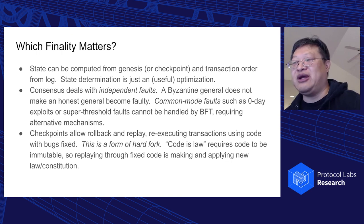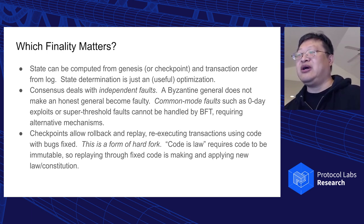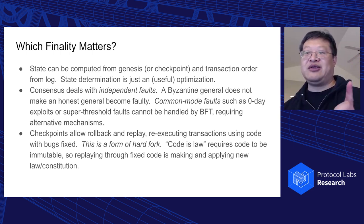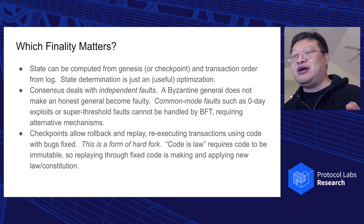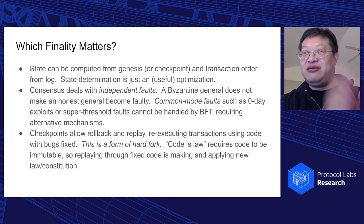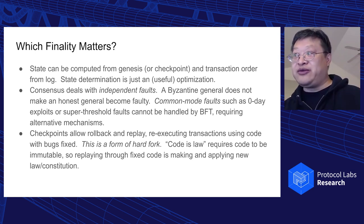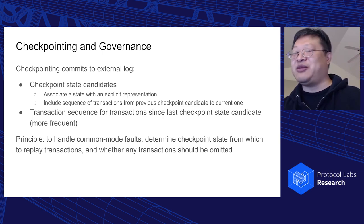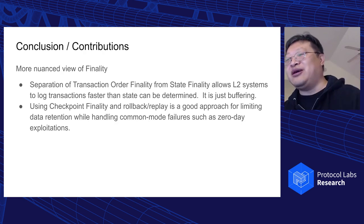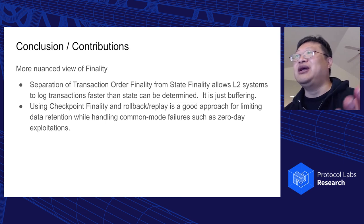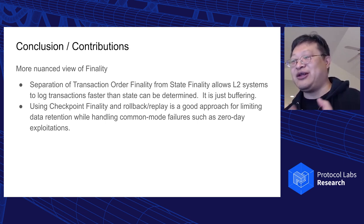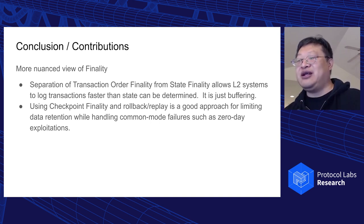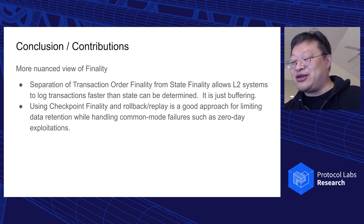Checkpointing is a principled way of allowing us to say, once a fault is identified, how do we determine what should be the case? We want to identify a past state that is before the zero-day was exploited, and maybe replay transactions from there through bug-fixed code. This is a governance issue — you may want to skip some of the transactions. What we're presenting is trying to crystallize and provide a more nuanced view of finality. I look forward to discussions. Thank you.